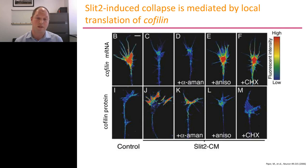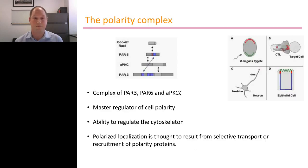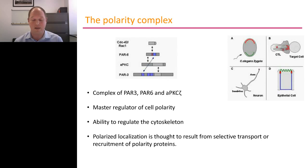Cofilin mRNA is heavily localized to axons and growth cones, and upon application of SLIT-2 the protein levels go heavily up. Anisomycin and cycloheximide prevent the increase of cofilin protein even though the mRNA is present. This leads to the rather puzzling question: why would different guidance cues lead to local translation of different proteins that have similar effects?